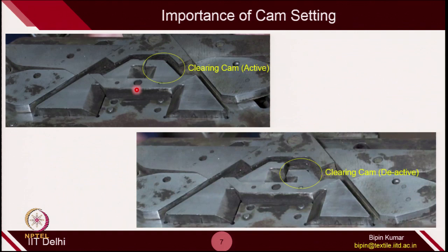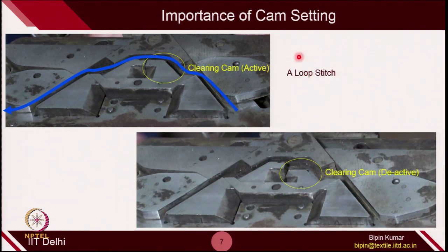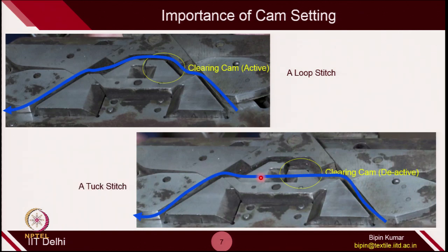This is the cam diagram for V-bed machine. This is the clearing cam. When the needle starts rising and the clearing cam is in active position, the needle will rise and clear the old loop — in this case it makes a loop stitch. When the clearing cam is in deactivated position, it means the metallic block is suppressed inside the plate, not hitting the butt. In that case, the needle rises but not sufficiently to clear the old loop, and it catches the new loop — making the tuck stitch.